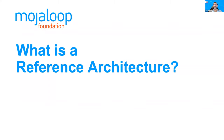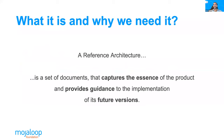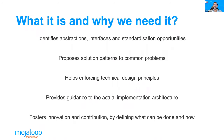So what is a reference architecture and how does it help? Why do we need one? In its most simple form, a reference architecture is a set of documents that capture the essence of the product and provide guidance to the implementation of its future vision. It identifies abstractions, interfaces, and standardization opportunities. It proposes solution patterns to common problems so that we don't have to solve them multiple different times. It helps enforcing technical design principles. It provides guidance to the actual implementation architecture. And it also fosters innovation and contribution by defining what can be done and how those things can be done — and this is the extensibility part.